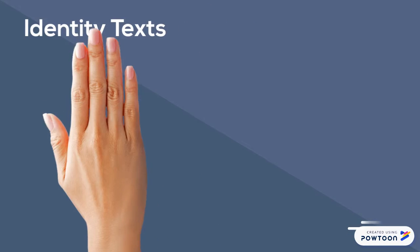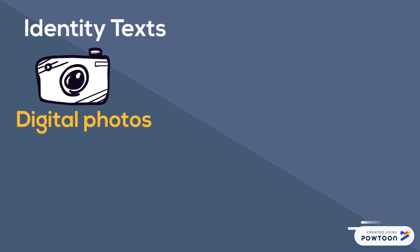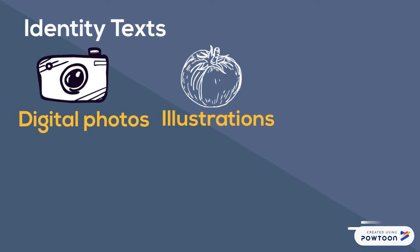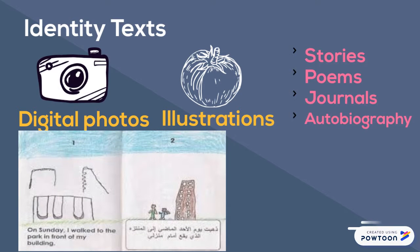Another strategy we would implement are identity texts. Identity texts are student-created texts combined with digital photos or illustrations that can be transformed into dual language books. Students can create various types of texts, such as stories, poems, journals, or even an autobiography, and translate those texts into their mother tongue.